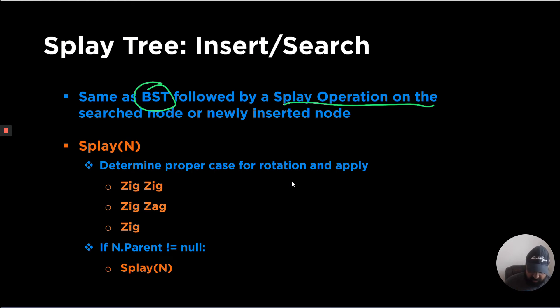So this splay operation is basically determining which rotation to apply out of zigzig, zigzag, and zig, and you keep splaying the nth element, which is the element that you are trying to search or the element that you are trying to insert till it becomes the root node, which is it does not have a parent.